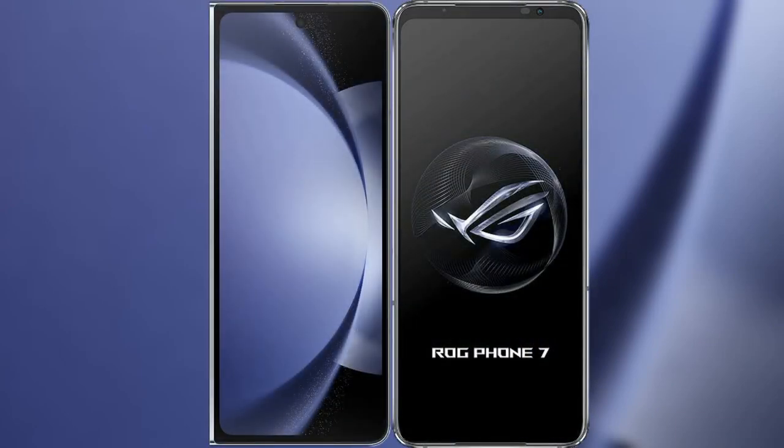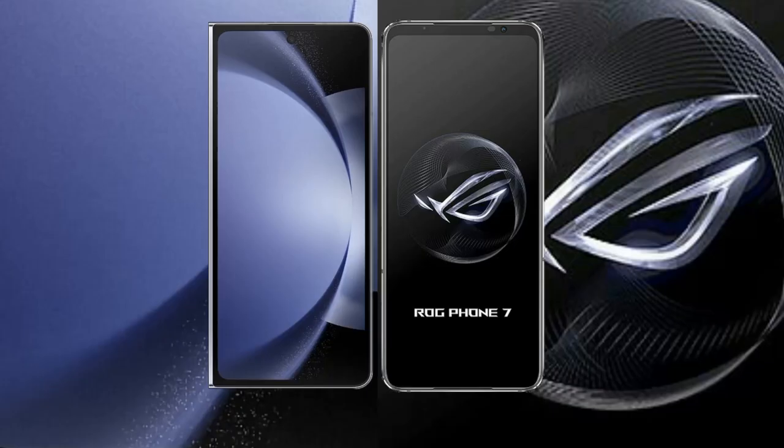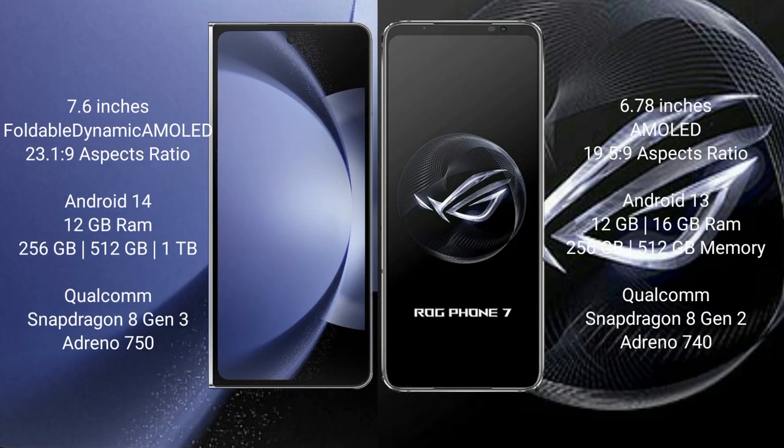I will compare the new Samsung Galaxy Z Fold 6 with the ASUS ROG Phone 7. The Samsung Galaxy Z Fold 6 comes with a 7.6-inch foldable Dynamic AMOLED display and Exynos processor. The ASUS ROG Phone 7 features a 6.78-inch AMOLED display.